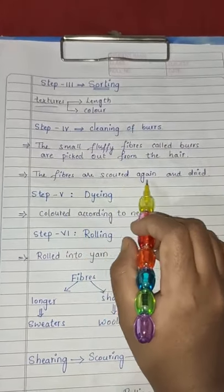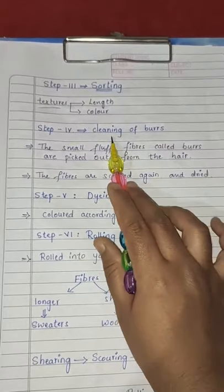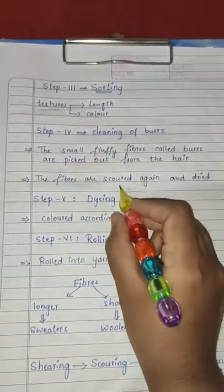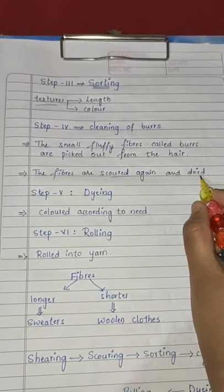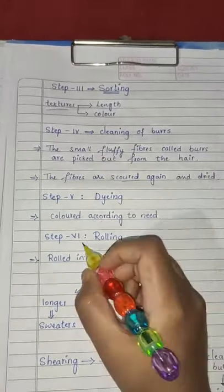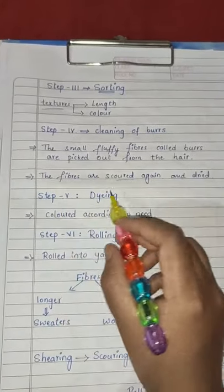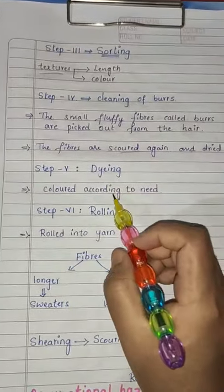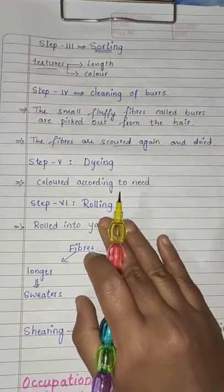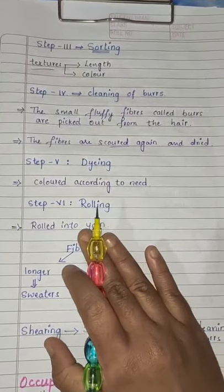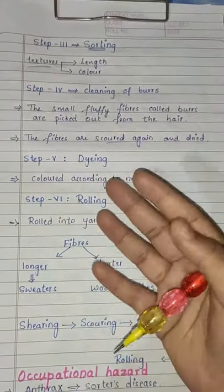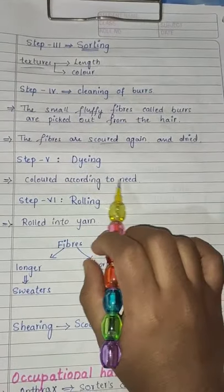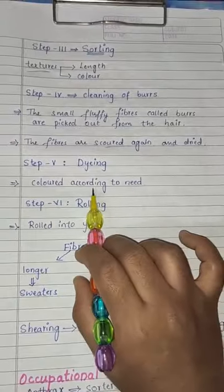After cleaning of burrs, the fibers are washed again and dried. Then they go to step five, which is dyeing — the coloring of the fibers. Naturally, wool fibers come in three colors: black, brown, and white. That is why coloring of the fibers is needed to produce different shades.